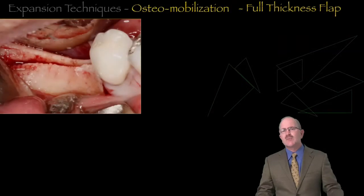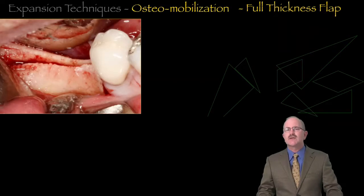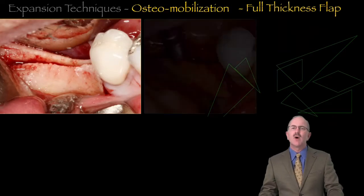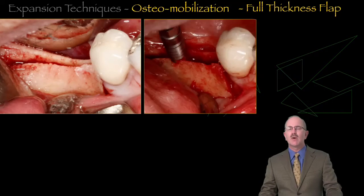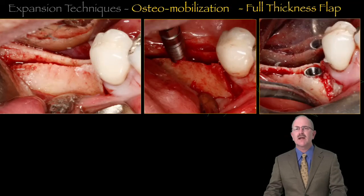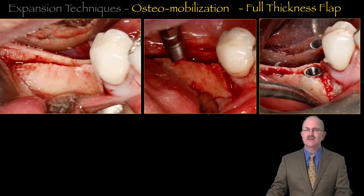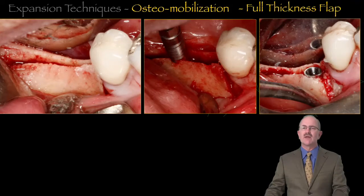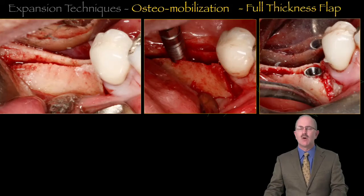The question is, why would you want to use Ridge Expansion? Ridge Expansion allows us, through varying techniques, to make cuts in the bone, to bend the bone, and to create a four-wall bony defect that we can place a tapered implant into with viable bone surrounding it.